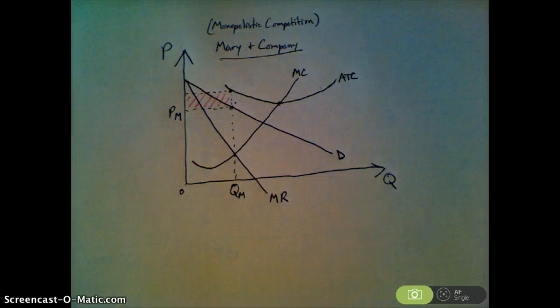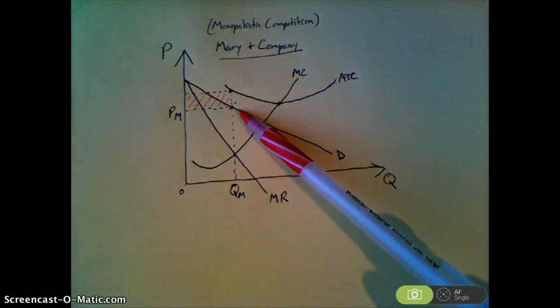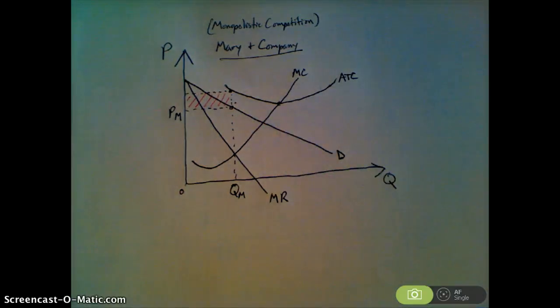And that completes part A. For B, what must be true in the short run for the company to continue to produce at a loss? The same thing that is true for perfect competition, or anybody really to stay in operation. If they are experiencing economic losses, the price that they receive here while it's below the average total cost must be above the average variable cost. We don't have to draw it in there. We can just say that the price that Mary and Company receive for the quantity QM has to be above their average variable cost at producing output QM.